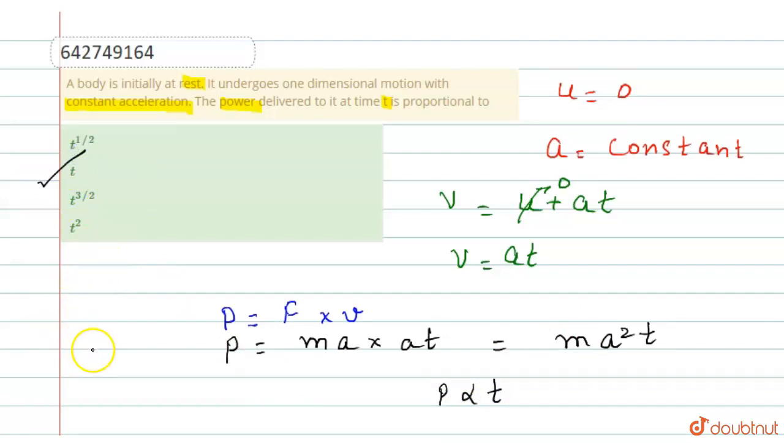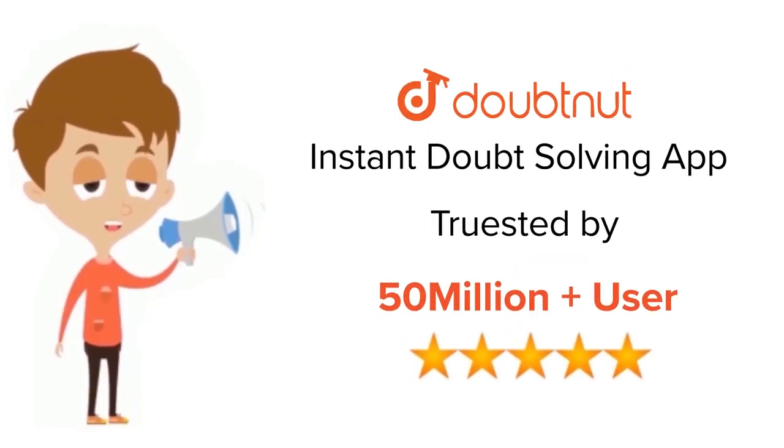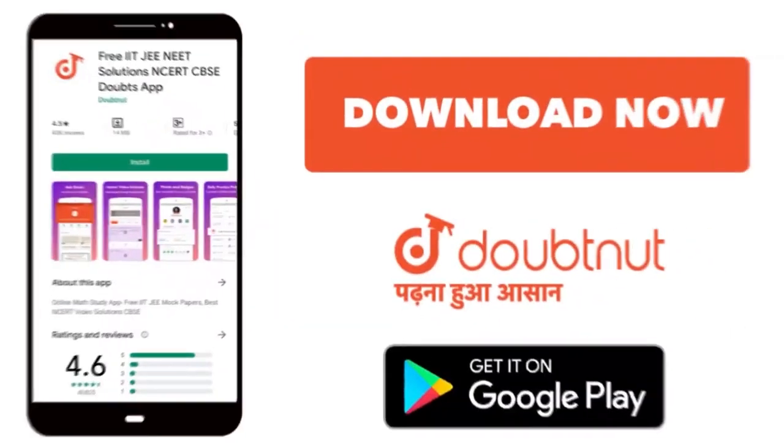I hope you understand the explanation. Thank you. For class 6 to 12, IIT-JEE and NEET level trusted by more than 5 crore students. Download Doubtnut app today.